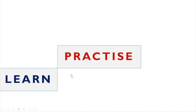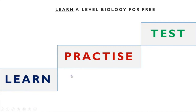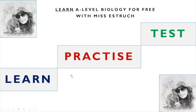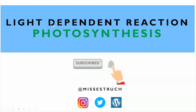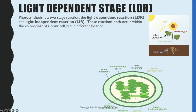Hi everyone and welcome to learn A-level biology for free with Miss Estrick. In this video I'm going to be going through the first stage of photosynthesis which is the light dependent reactions. The light dependent stage involves a series of reactions and it is the first stage in photosynthesis; the second one is the light independent reactions.